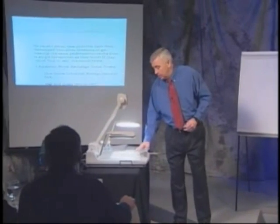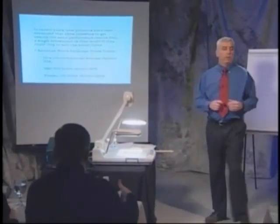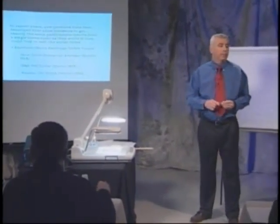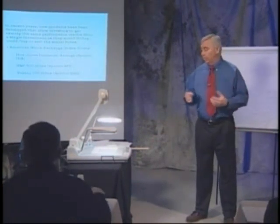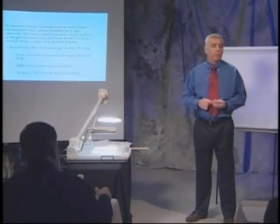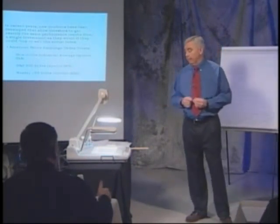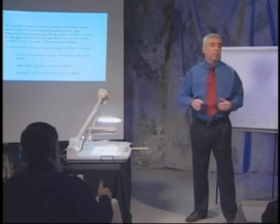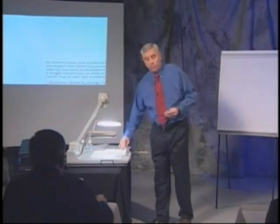There are several securities you can buy to track these indexes. For the Dow Jones Industrial Average, there are the Diamonds, symbol DIA — it trades like a stock but you own shares in all 30 Dow stocks. For the S&P, there are the Spiders, symbol SPY. For the Nasdaq 100 index, there's the QQQ, the Cubes. That's how you would buy an index to take advantage of this strategy.